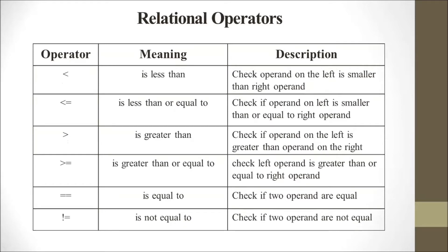Relational operators are used to compare two values. Less than (<) checks if the left operand is smaller than the right. Less than or equal to (<=) checks if the left operand is smaller than or equal to the right. Greater than (>) checks if the left is greater than the right. Greater than or equal to (>=) checks if the left operand is greater than or equal to the right. Equal to (==) checks if two operands are equal. Not equal to (!=) checks if two operands are not equal.